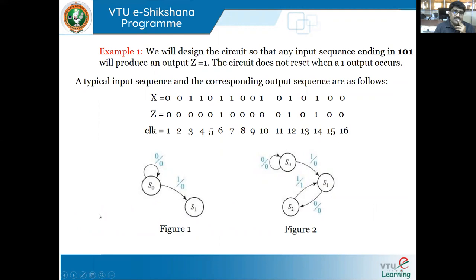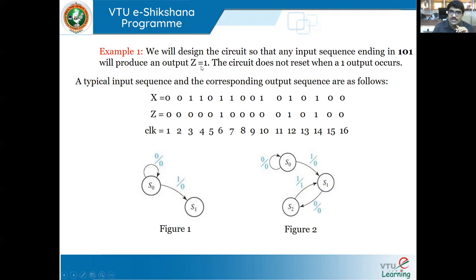For example one: the problem statement is to design a circuit so that an input sequence ending in one-zero-one will produce an output z equal to one. Whenever we encounter one-zero-one in this string of bits, the output z should become one. Also, the circuit does not reset when one output occurs — meaning whenever the circuit produces output one after detecting one-zero-one, it continues from there and does not reset.